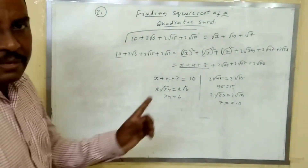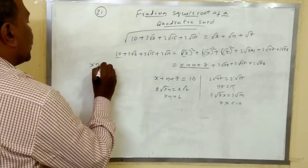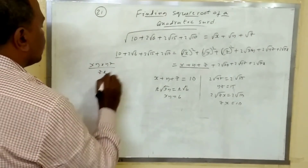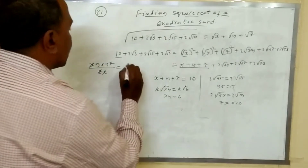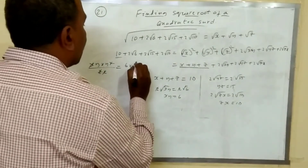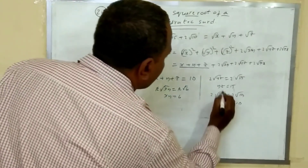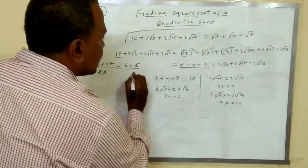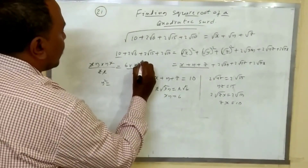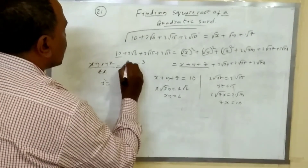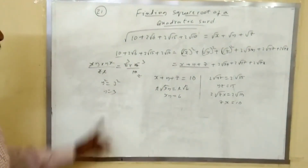To find x, y, z, compute xy times yz divided by zx. The z's and x's cancel, leaving y squared. Substituting: 6 times 15 divided by 10 equals 9, so y squared equals 9, giving y equals 3.